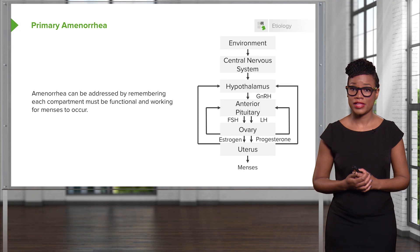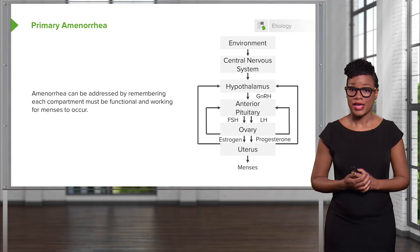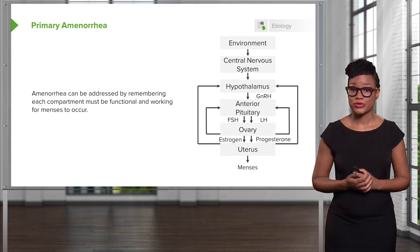If she has amenorrhea, something has gone wrong at the level of the HPO axis. It could be the environment feeding back information into the CNS, which corresponds to the hypothalamus. The hypothalamus has to release gonadotropin-releasing hormone to the anterior pituitary. The anterior pituitary will release gonadotropins — FSH, follicle-stimulating hormone, and luteinizing hormone, or LH — to the ovary. The ovary then produces estrogen and progesterone, which influence the uterus, and the withdrawal of both hormones results in a menstrual cycle.